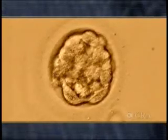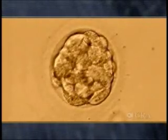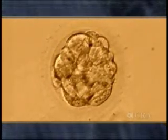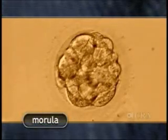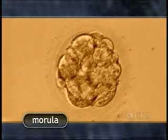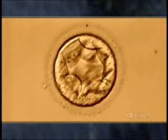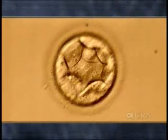By three to four days after fertilization, the dividing cells of the embryo assume a spherical shape and the embryo is called a morula. By four to five days, a cavity forms within this ball of cells and the embryo is then called a blastocyst.